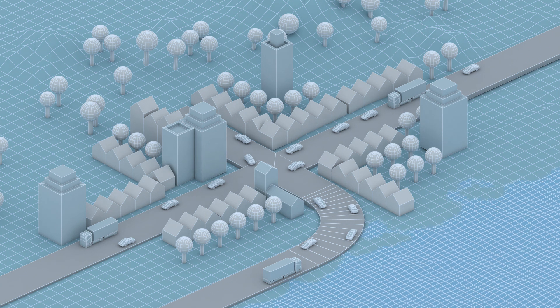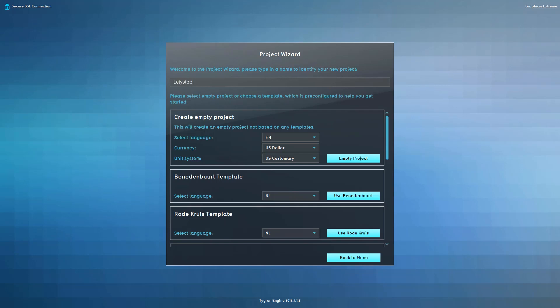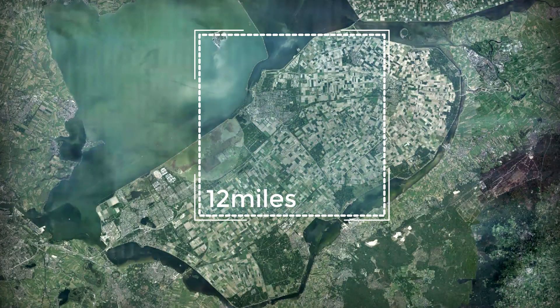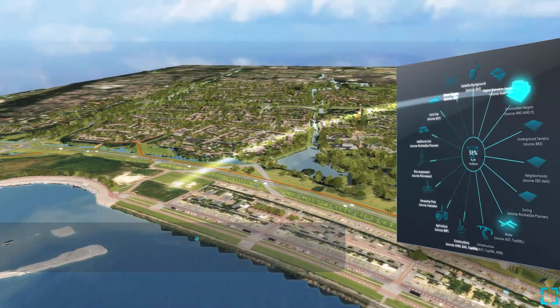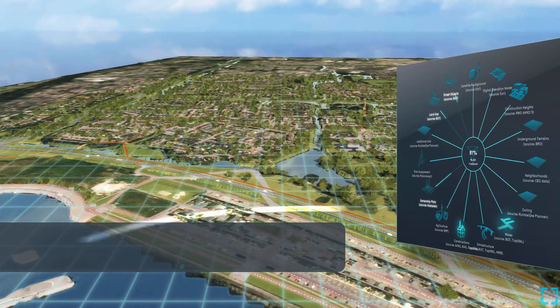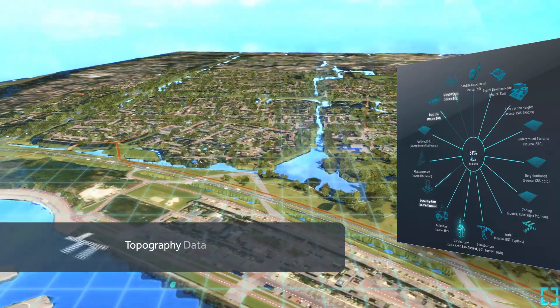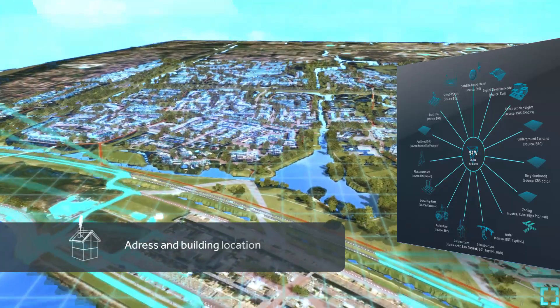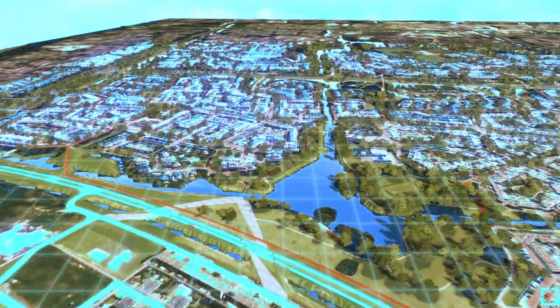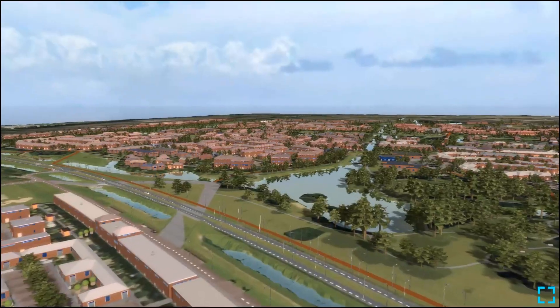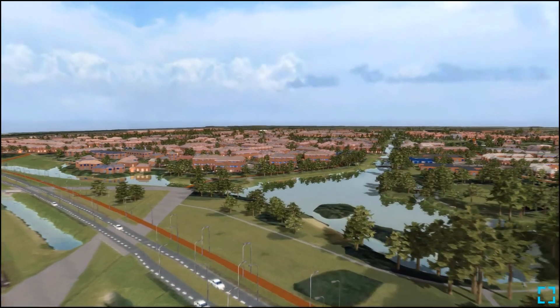Take our flooding module for instance. How does it work? You start a new project by first selecting an area. The Tigran platform loads information about surface elevation, channels and ditches, and construction and roads in real time. With all this data, the platform creates a dynamic three-dimensional model of the selected area.